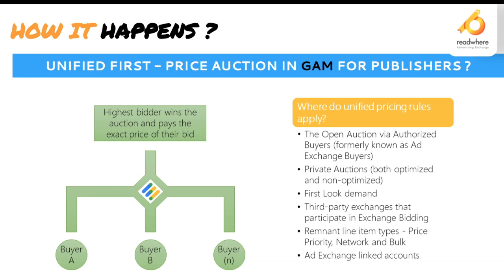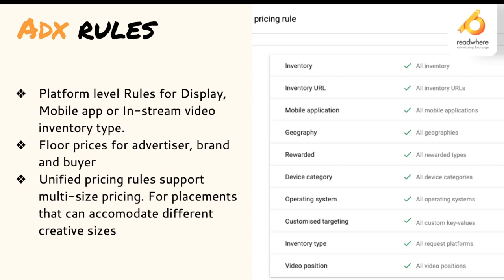ADX has also evolved with time. ADX allows you to set various rules at different levels — platform-level rules for display, mobile app, or video; floor prices for advertisers and brand buyers; and unified pricing rules such as multi-size pricing for placements that can accommodate different creative sizes. Based on the size of an ad, you can create rules and prices for various sizes. There are additional choices based on geography, device category, operating system, and so on.